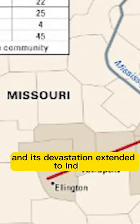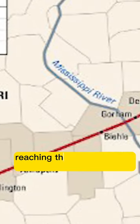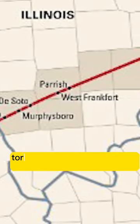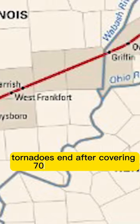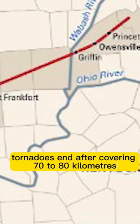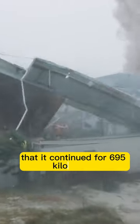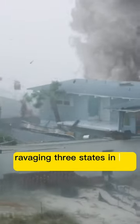It started in Ellington, Missouri at 1 p.m., and its devastation extended to Indiana, reaching there at 4:44 p.m. Normally, tornadoes end after covering 70 to 80 kilometers. But the Tri-State Tornado was so deadly that it continued for 695 kilometers, ravaging three states in the USA.